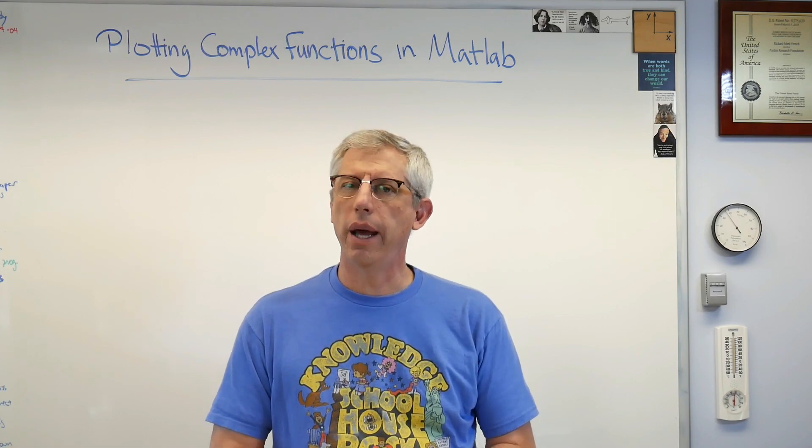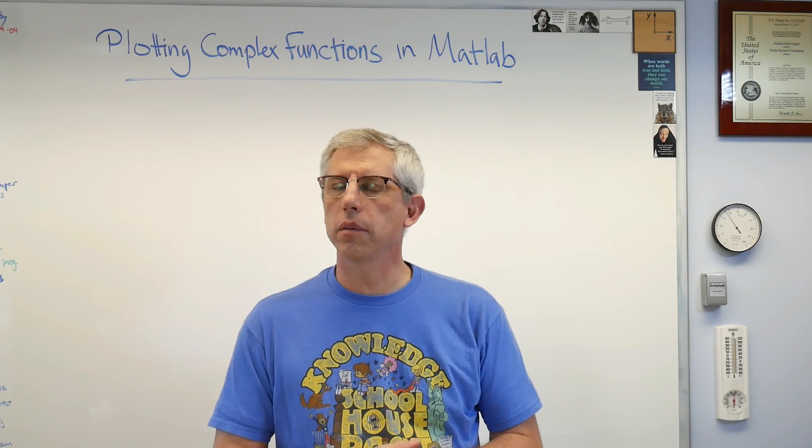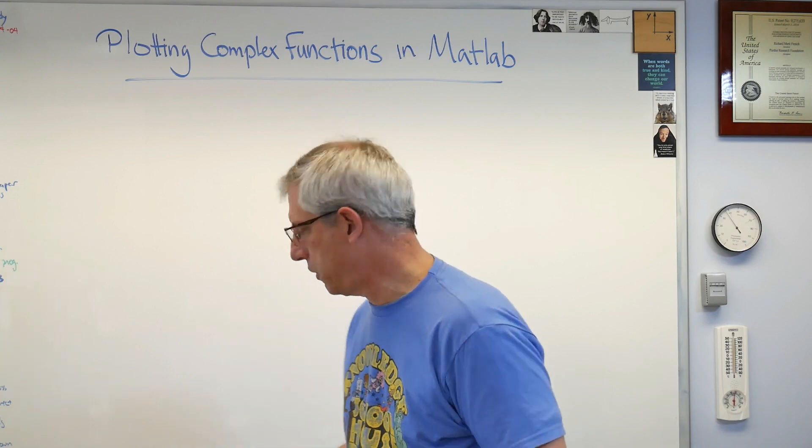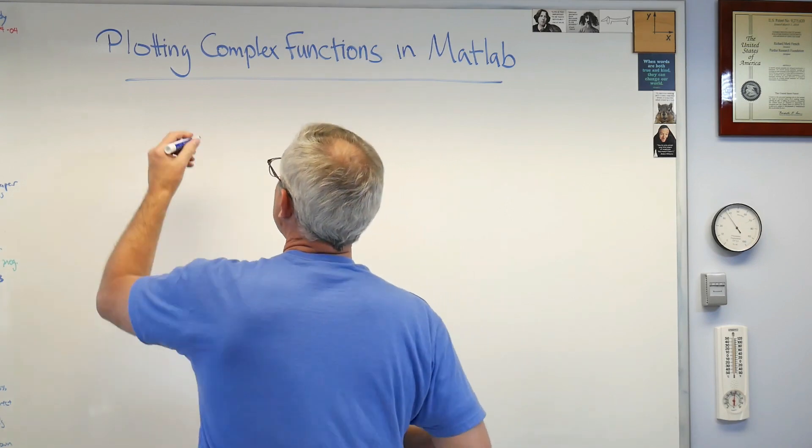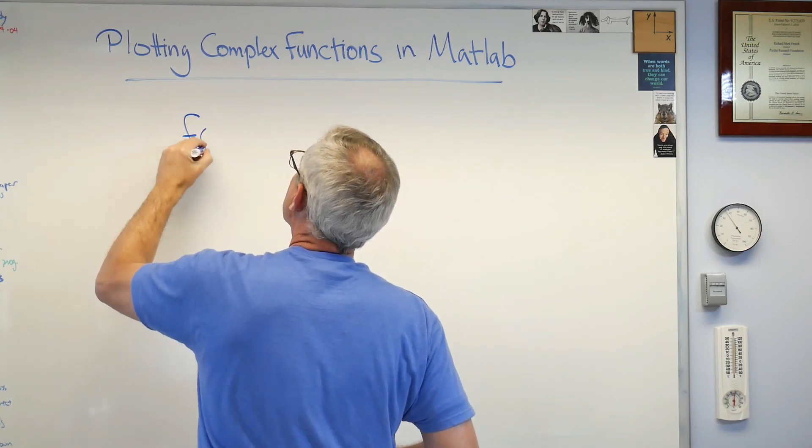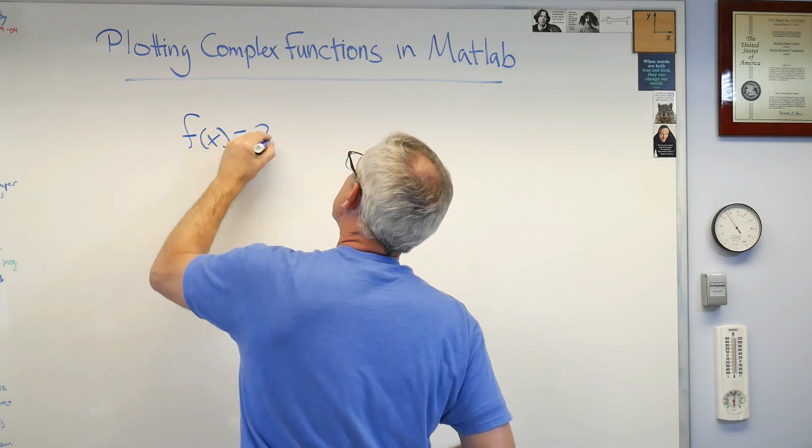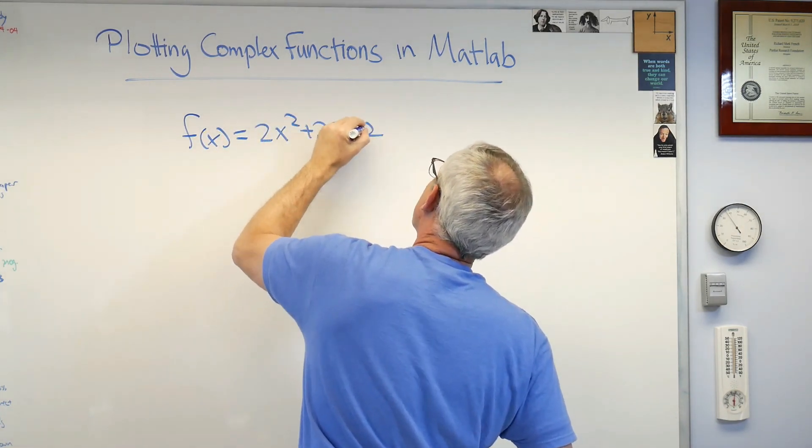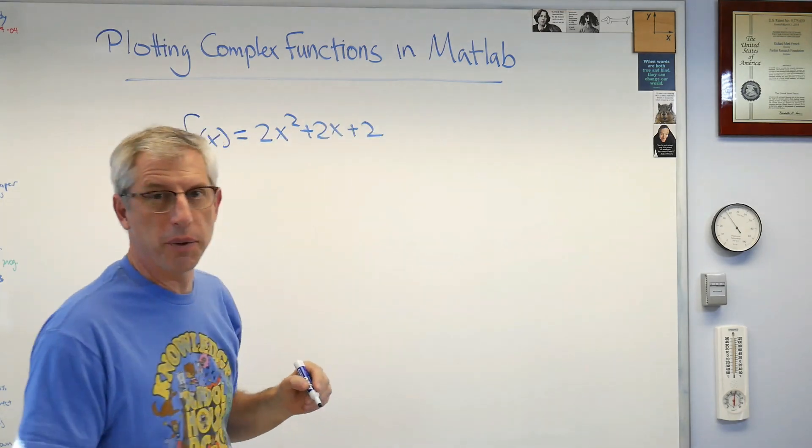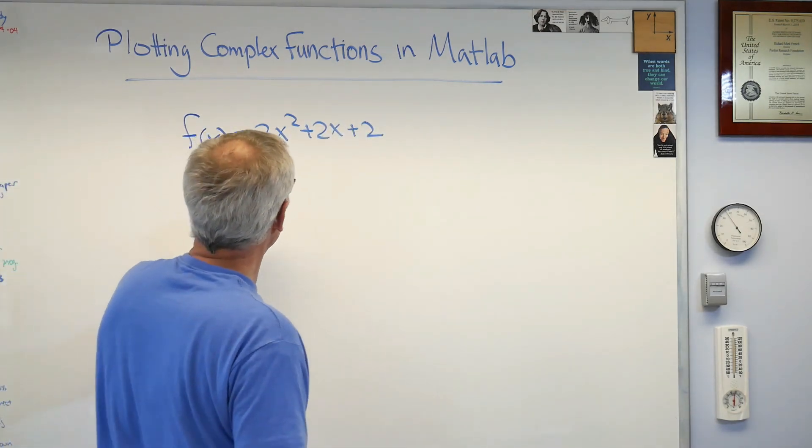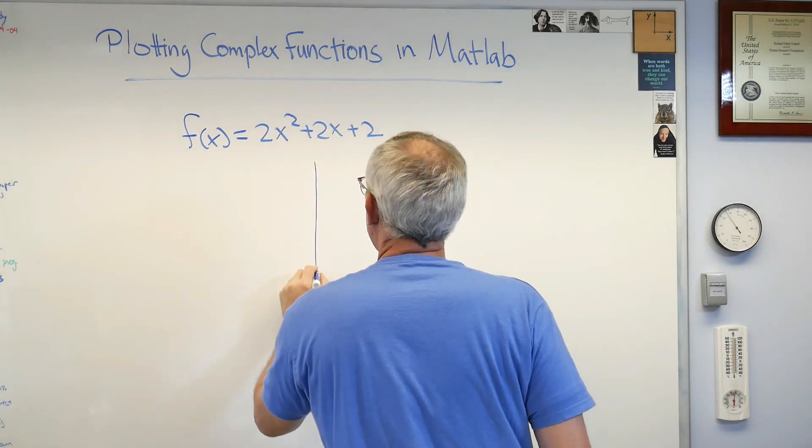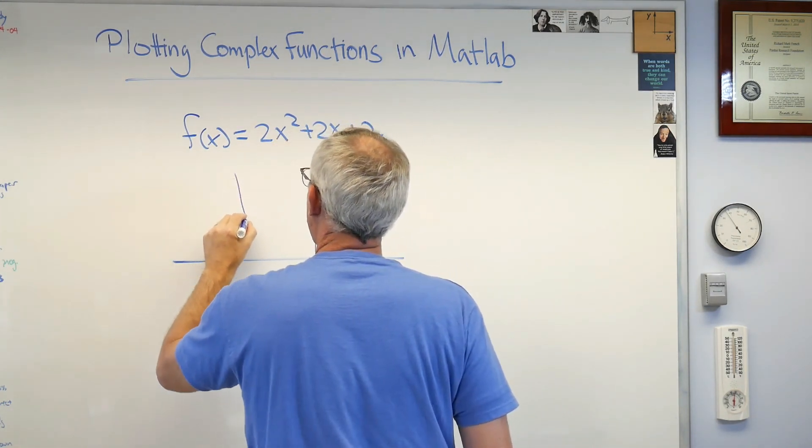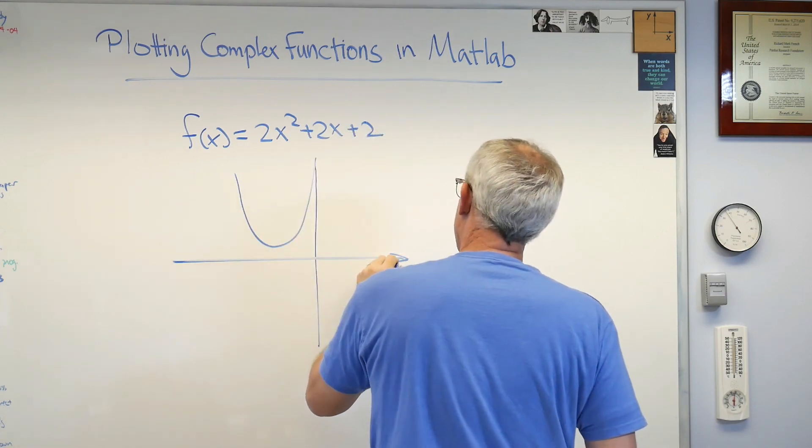I'm going to start with a quadratic equation that has complex roots. I'm going to show you how to find those roots using complex numbers. Here's a real simple quadratic equation: f of x equals 2x squared plus 2x plus 2. They hardly come simpler than that, right?